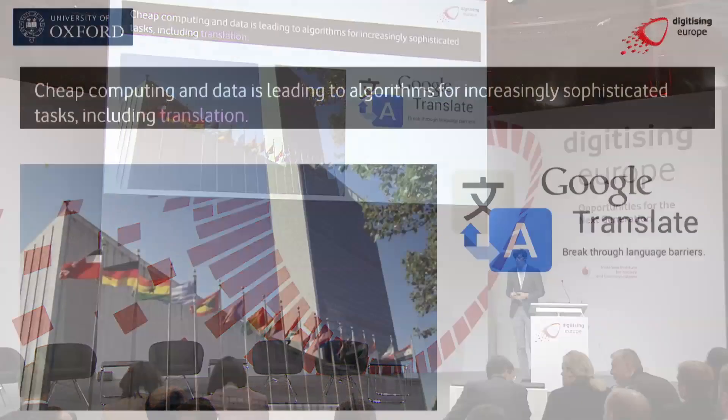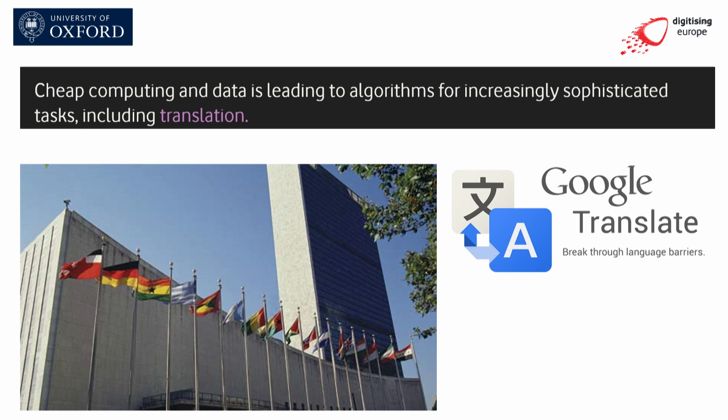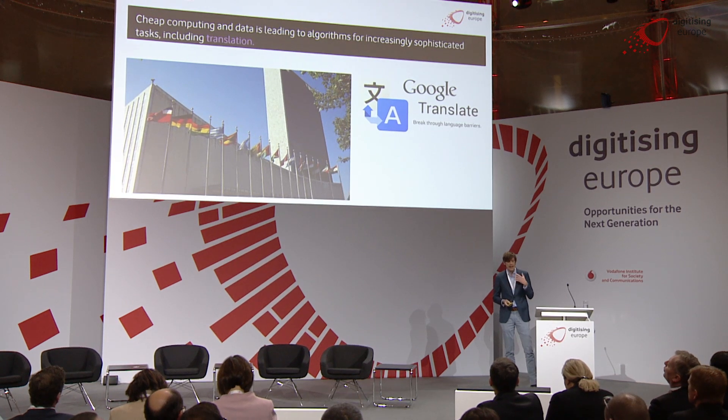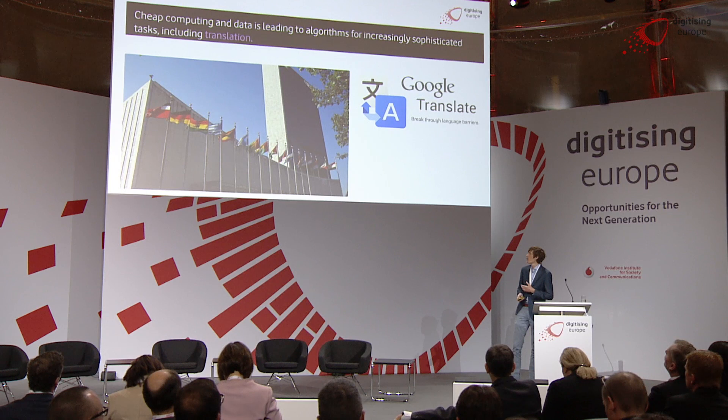We're seeing some consequences of this for employment already, driven by big data and machine learning algorithms. One example is Google Translate — it's pretty effective at translating text from one language to another, and it's very much driven by big data. Google Translate is built on a corpus of 200 billion words drawn from UN documents, which are required to be translated into six different languages. When it wants to translate a particular bit of text, it digs through that data, finds a phrase relatively close to the desired translation, and returns the result immediately. Algorithms are able to use big data to perform tasks that might once only have been performable by human beings.